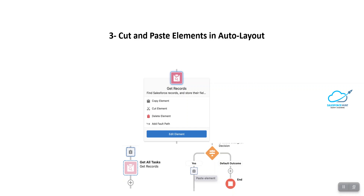The next feature is Cut and Paste Element in Auto Layout. Starting with the Winter 23 release, you can cut and paste a single element in auto layout mode. Before this release, you had to switch to the free-form layout to do this. You can see the scissor icon to cut an element — for example, Get Records. Once cut, it shows a dotted line around it, and you can paste it anywhere using the paste icon.